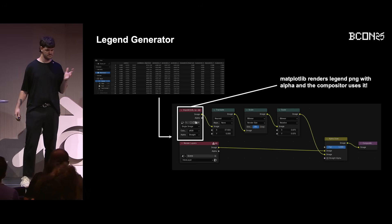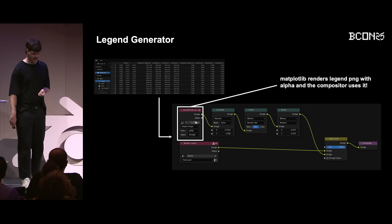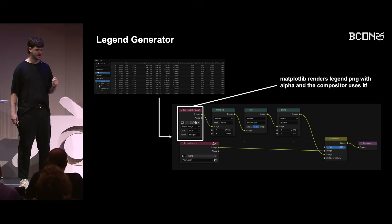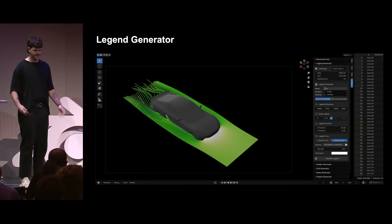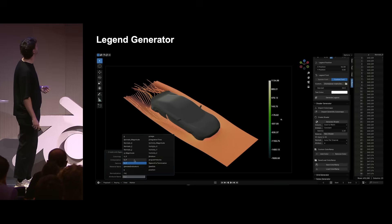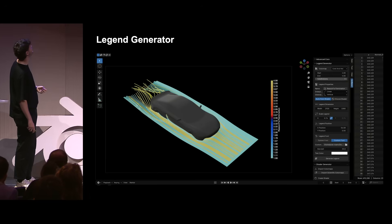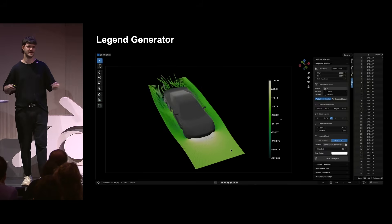But what is a scientific plot without a legend? Creating one manually in Blender is a painful process of aligning texts and objects — it's awful. So we automated that too. The legend generator uses Matplotlib to render a legend as a PNG with transparency, and then automatically composites it over your final render and viewport using Blender's GPU compositor. You get full control over fonts, colors, and layout with zero manual effort. Just change your shader and it automatically updates the legend.